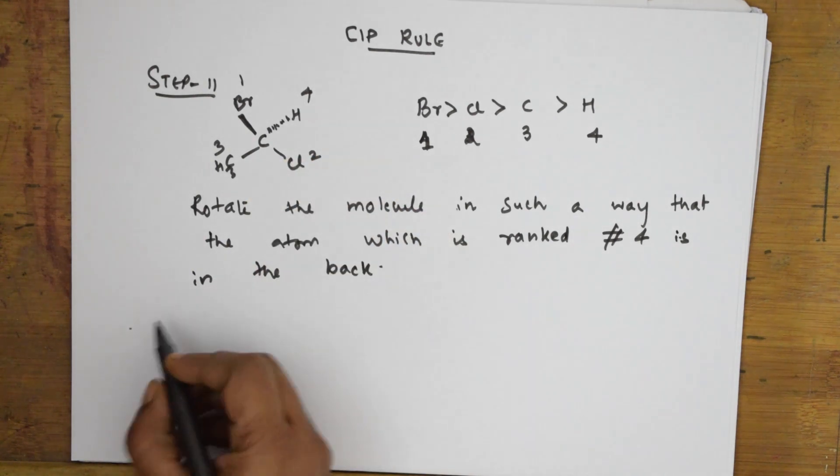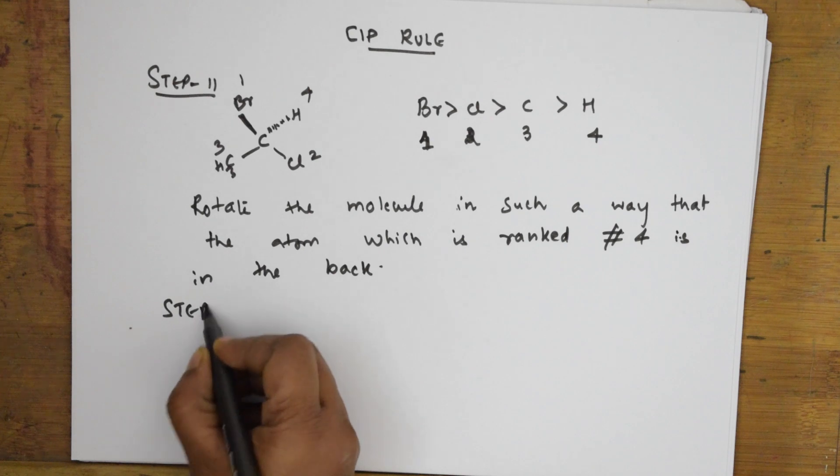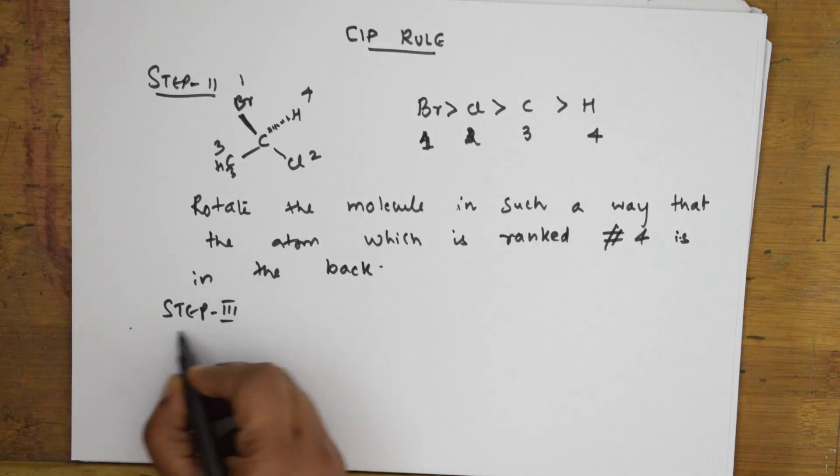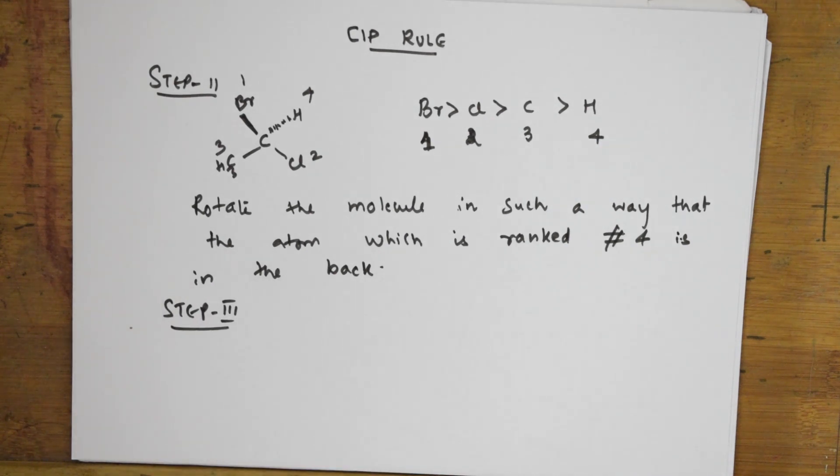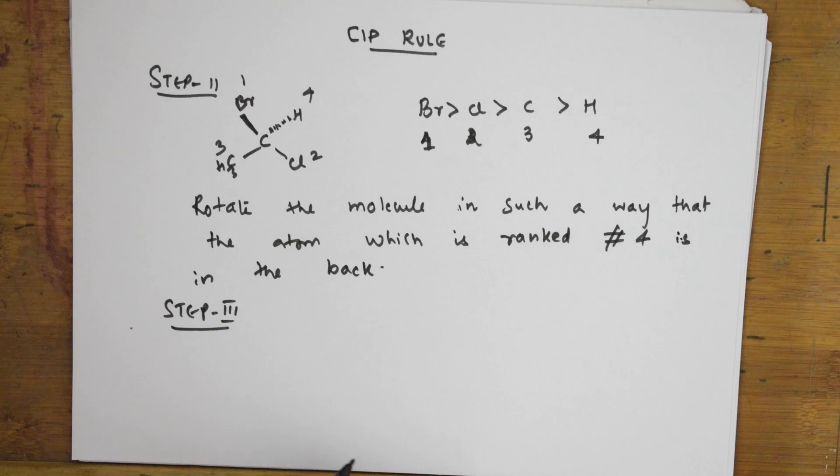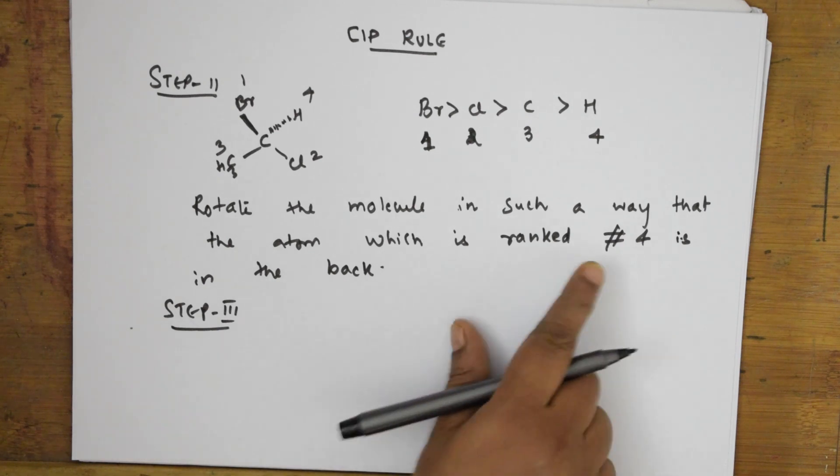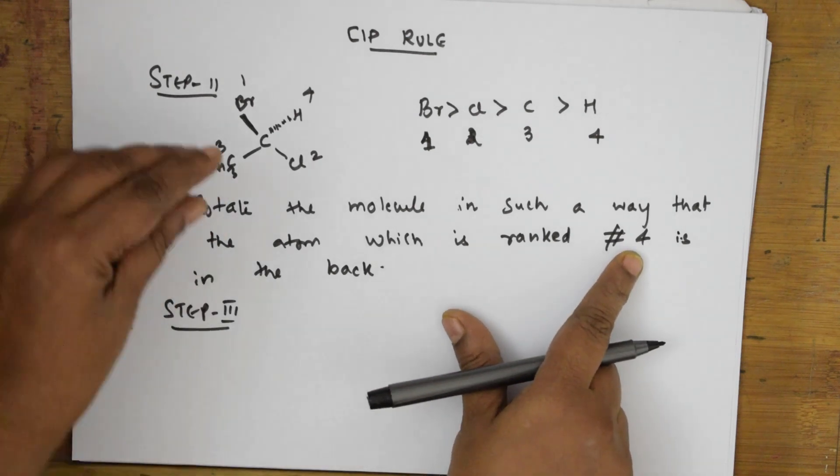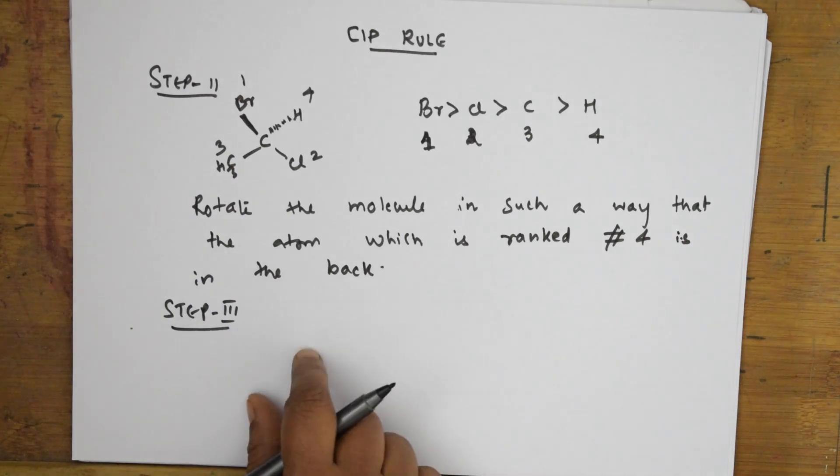Now I'm taking you to the step 3 part. In step 3, we have numbered it 1, 2, 3, and 4. With the fourth atom, hydrogen, at the back, suppose I am going to trace the path.